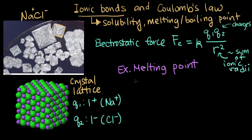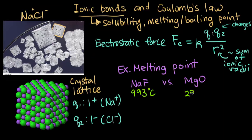The first two compounds we'll compare are sodium fluoride and magnesium oxide. Sodium fluoride has a melting point of 993 degrees Celsius, and magnesium oxide has a melting point of 2852 degrees Celsius. If you look up the ionic radii, it turns out that sodium fluoride, the distance between the ions, is about the same as magnesium oxide.